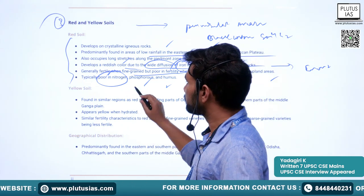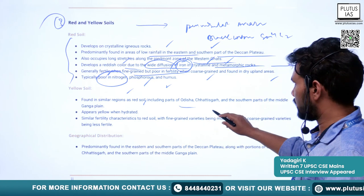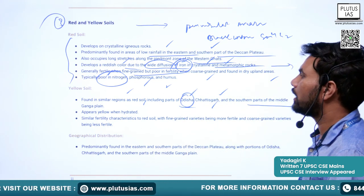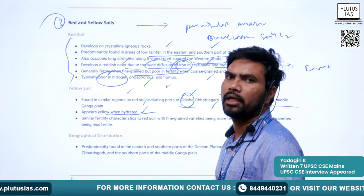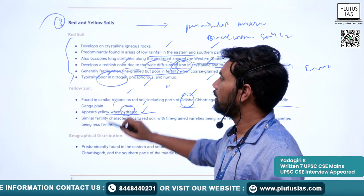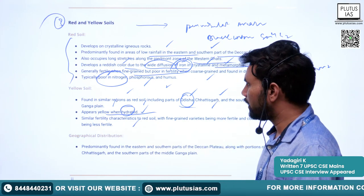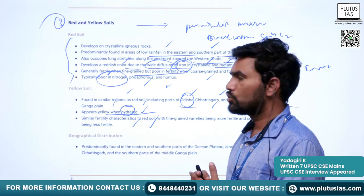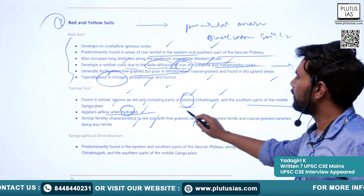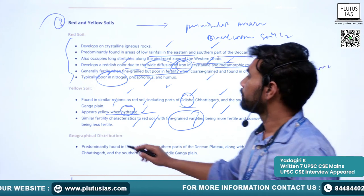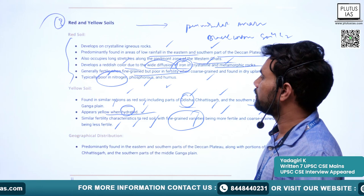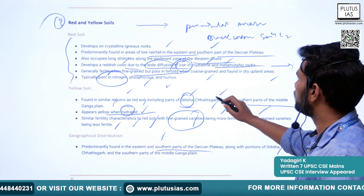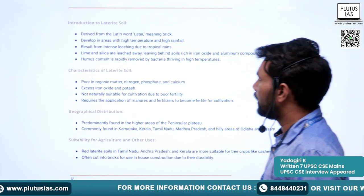Yellow soils are found in similar regions as red soils, including parts of Odisha and Chhattisgarh, and the southern parts of the middle Gangetic plain. They appear yellow when hydrated. The fertility characteristics are similar to red soil — more fertile when fine-grained, less fertile when coarse-grained. Both red and yellow soils are predominantly found in the eastern and southern parts of the Deccan plateau.